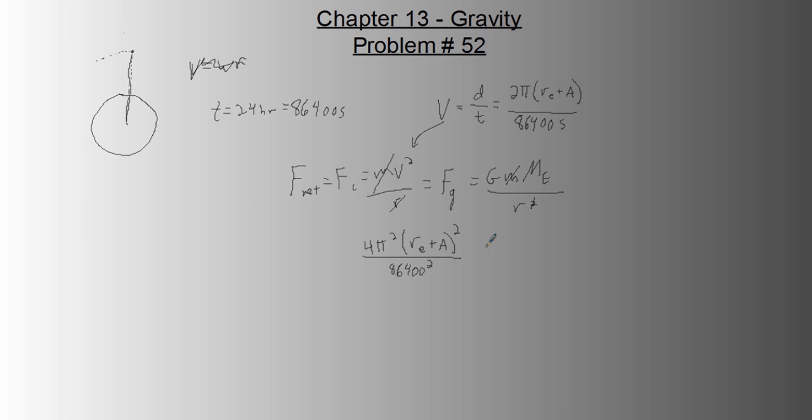So this equals g mass of the Earth over, now this distance r, where the satellite is, is again radius of the Earth plus the altitude. So I'm going to just label it like that. And so what's cool about this is that we can combine these. Basically get r_e plus a cubed, because we've got two of them here and a third one we're going to bring up, equals g mass of the Earth times 86,400 squared over 4 pi squared.